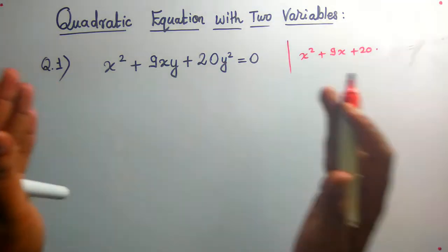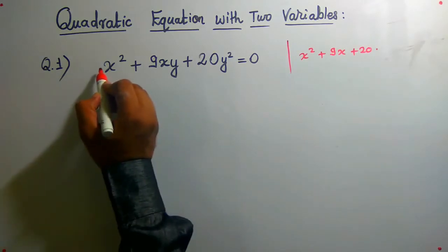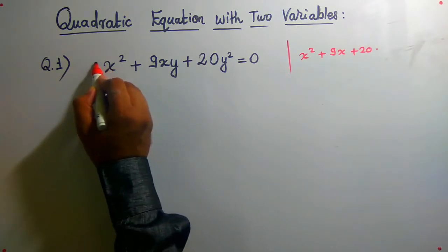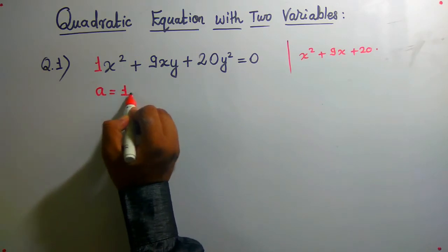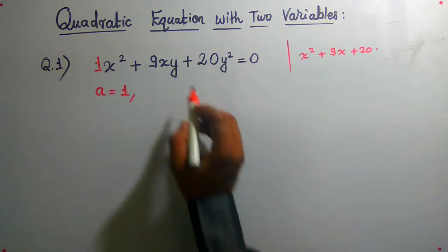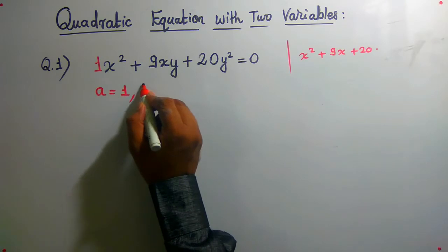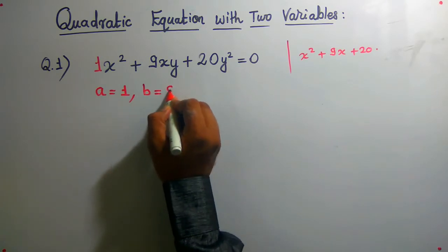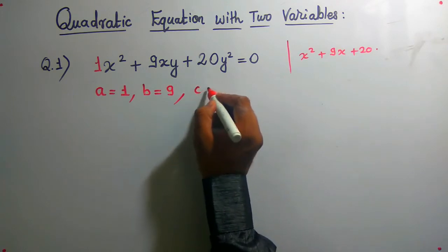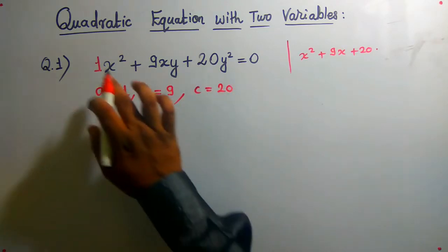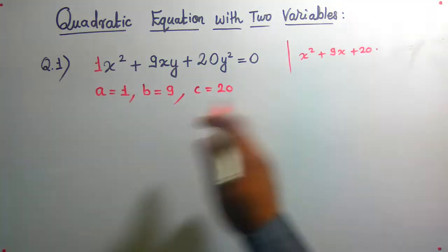You can see the x² coefficient is 1, call it as a. The xy coefficient is 9, call it as b. The y² coefficient is c. Actually these coefficients are not called as a, b, c in standard format.